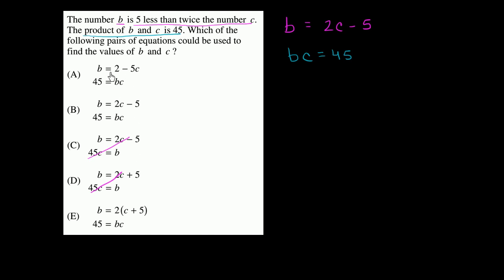So let's see. b is equal to 2 minus 5c. No, it should be 2c minus 5. So we can knock that one out.